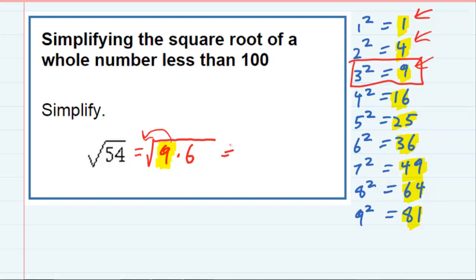So that 9 can come outside as a 3, and the 6 stays underneath the radical. So we've pulled out part of it, we've simplified it, and made it instead of the square root of 54, now the only thing underneath the radical is the 6.